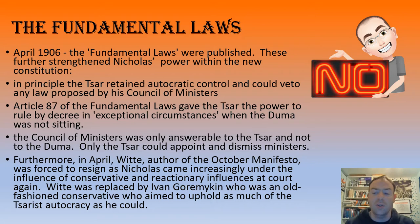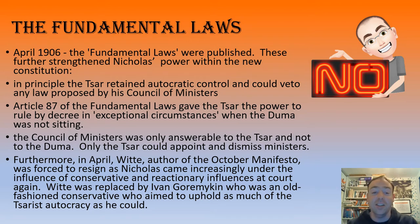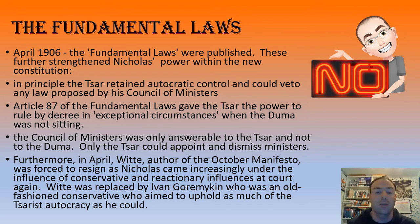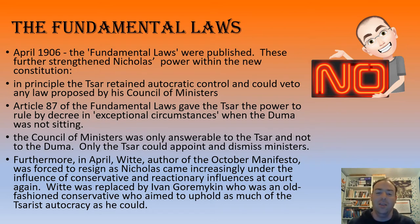The proposed power and influence of the Duma started to collapse very quickly. Witte, the reformer who had authored the October Manifesto, was forced to resign, and conservative reactionary influences at court began to re-emerge and take power - a familiar theme in Tsarist Russia, much like what happened with Alexander II where reform was pushed and then reactionary influences pulled things back. Witte was replaced by Goremykin, an old-fashioned conservative who wanted to uphold Tsarist autocracy. The Fundamental Laws showed a fundamental shift away from the liberal reforms promised in the October Manifesto.